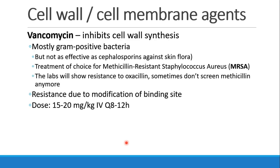Let's talk about a few other cell wall agents. Vancomycin inhibits cell wall synthesis, and so it works mostly against gram-positive bacteria. It's not as effective as cephalosporins against skin flora, so we always prefer cephalosporins when we can. But where vancomycin becomes very useful is in the treatment of MRSA — methicillin-resistant Staph aureus. This bacteria colonizes the body routinely, and many of us may be colonized with MRSA, often in the nostrils. We culture patients with a nasal swab to see if they grow out MRSA. If you look at the labs, it actually looks at oxacillin resistance, so maybe we should call it ORSA, but we still call it MRSA. If patients have MRSA, we add vancomycin to their prophylactic treatment.